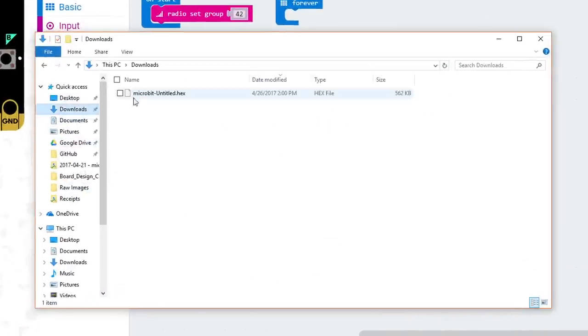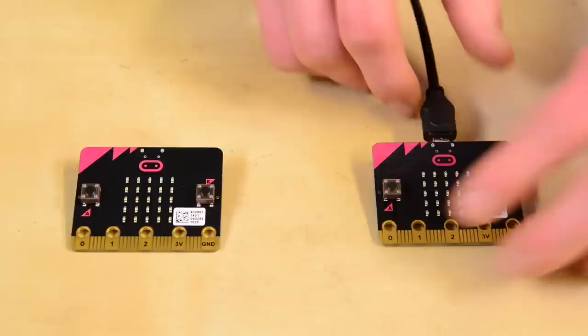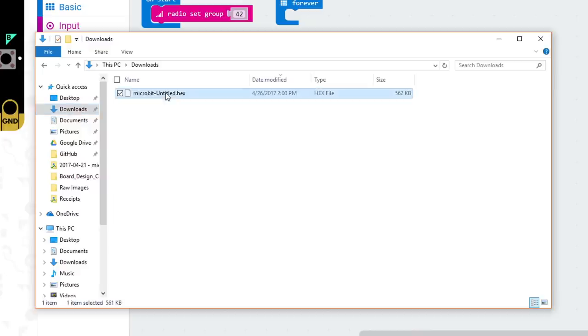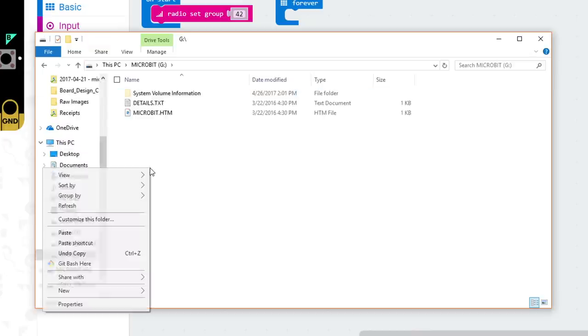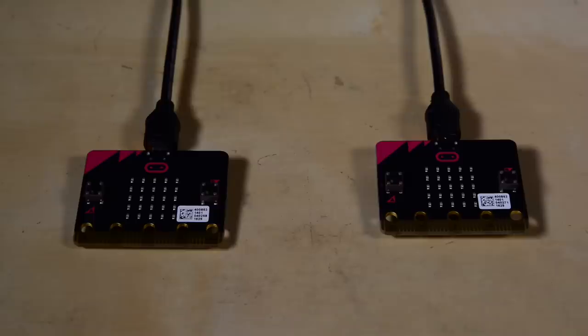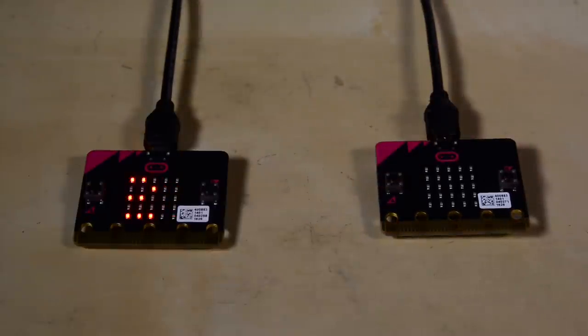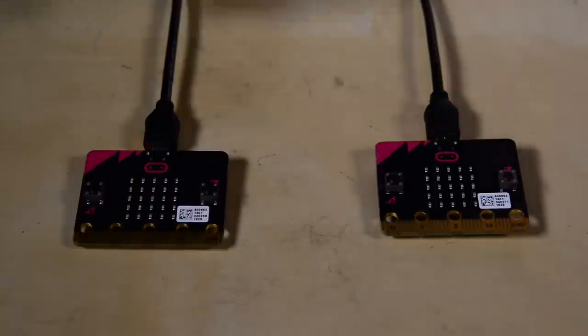Download this program and then copy it to your microbit. Unplug your microbit and plug in the second microbit. Copy the same file you downloaded into the new microbit drive. Make sure both microbits have power. Now, when you press the A button on one, Yes appears on the other. Same thing with pressing B. The word No scrolls across the other microbit.